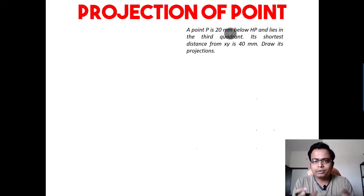First of all, let's try to extract data from the description of the problem. A point P is 20 mm below HP and lies in the third quadrant. So one thing is for sure that the point is situated in the third quadrant and it is 20 mm below HP.